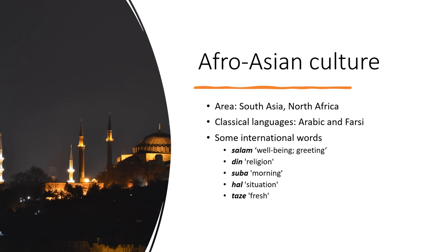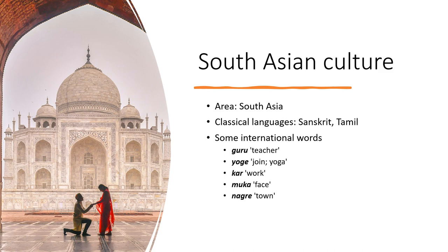The next great culture is the South Asian culture, which covers the subcontinent of India and Indochina. The classical languages of this culture are Sanskrit and Tamil. Some international words coming from this culture are: guru, which means teacher; yoga, which means join, joining, or union — known in the West especially through the practice of yoga. Other words include kar (work), muka (face), and nagre (town or city).